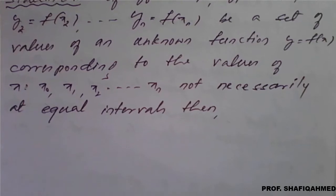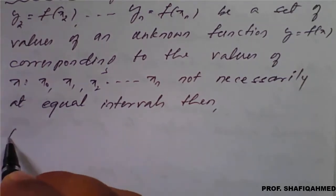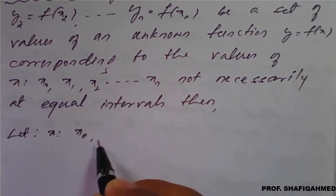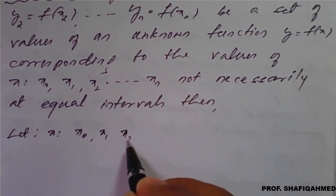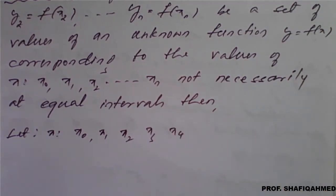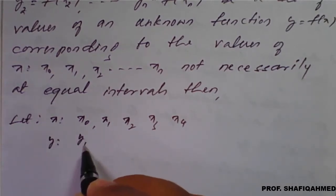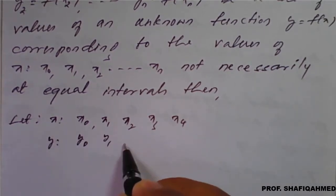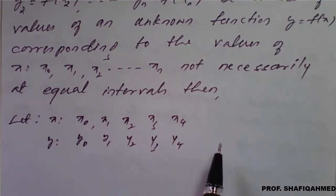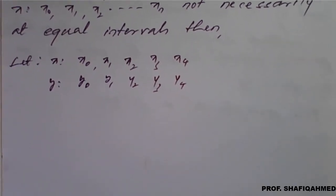Here for our simplification, to prepare a formula, I will consider let x vary from x0, x1, x2, x3, x4, and y vary from y0, y1, y2, y3, y4. In terms of the general, I will take this specifically so that it will be easy to understand. The Lagrangian formula is given by f of x, y equal to f of x.